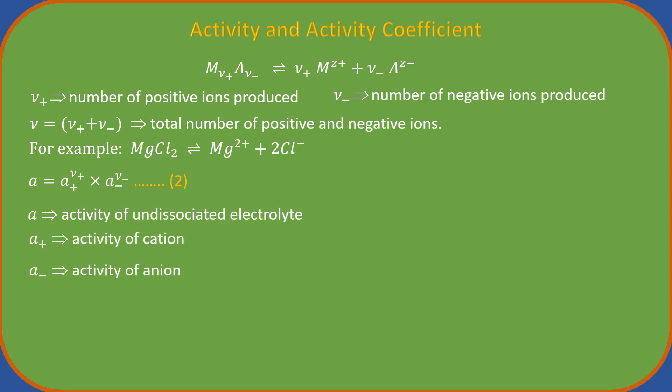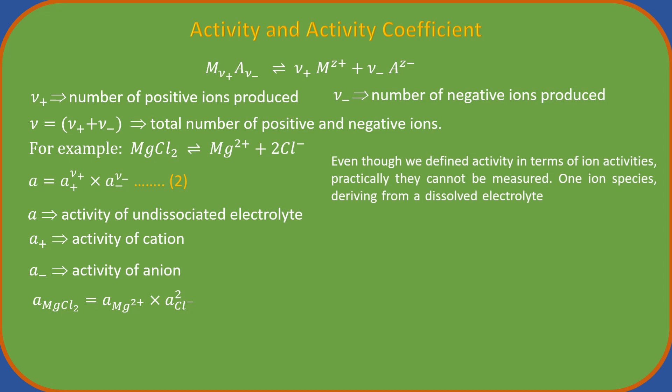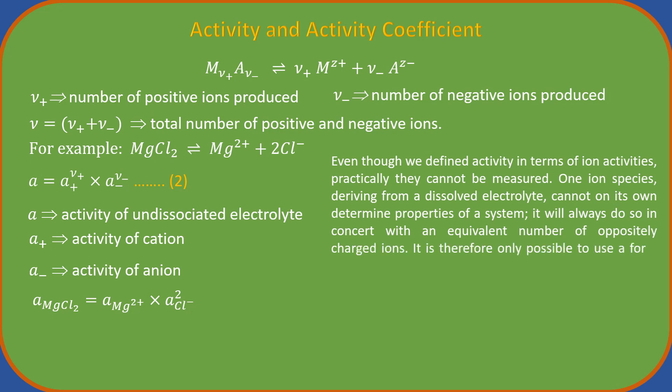For example, the activity of undissociated magnesium chloride could be written as the product of activities of magnesium and chloride ions. Even though we defined activity in terms of ionic activities, practically they cannot be measured. One ionic species deriving from a dissolved electrolyte cannot on its own determine properties of a system. It will always do so in concert with an equivalent number of oppositely charged ions. It is therefore only possible to use a form of activity or activity coefficient which takes account of both type of the ions characteristic of the electrolyte.